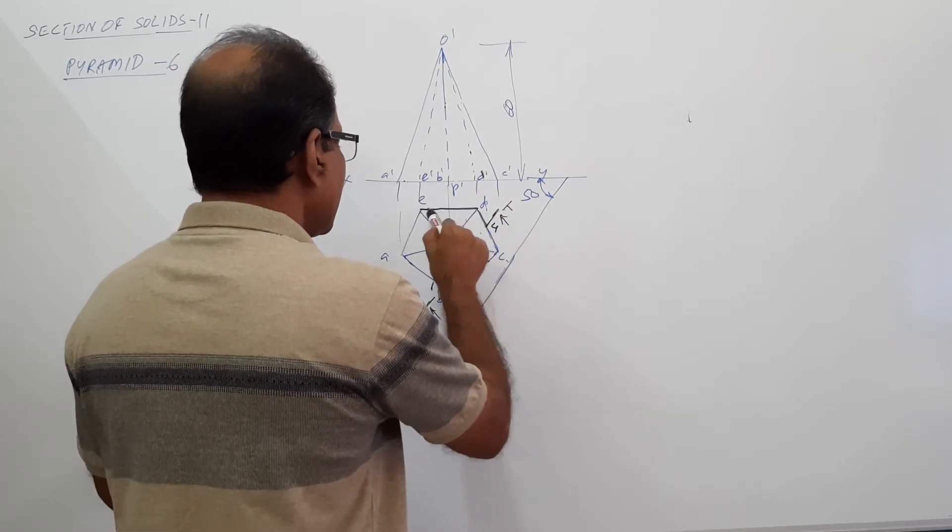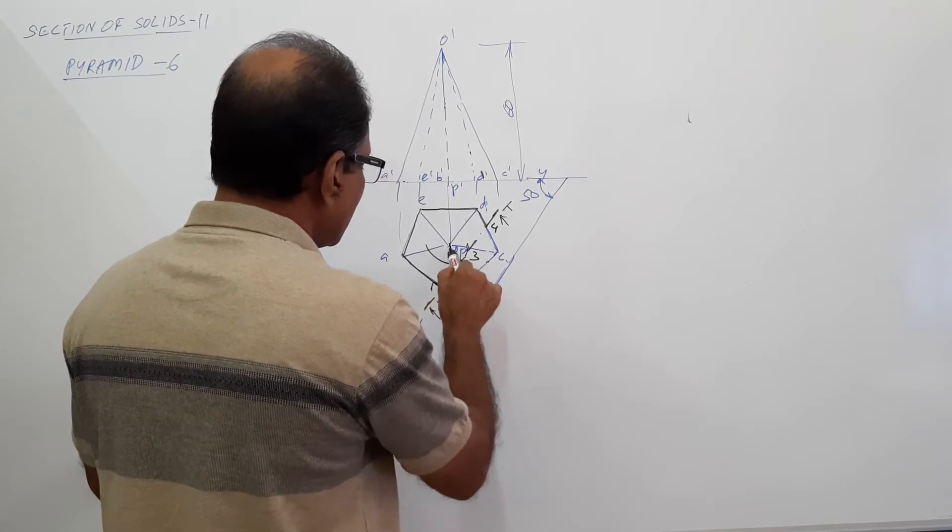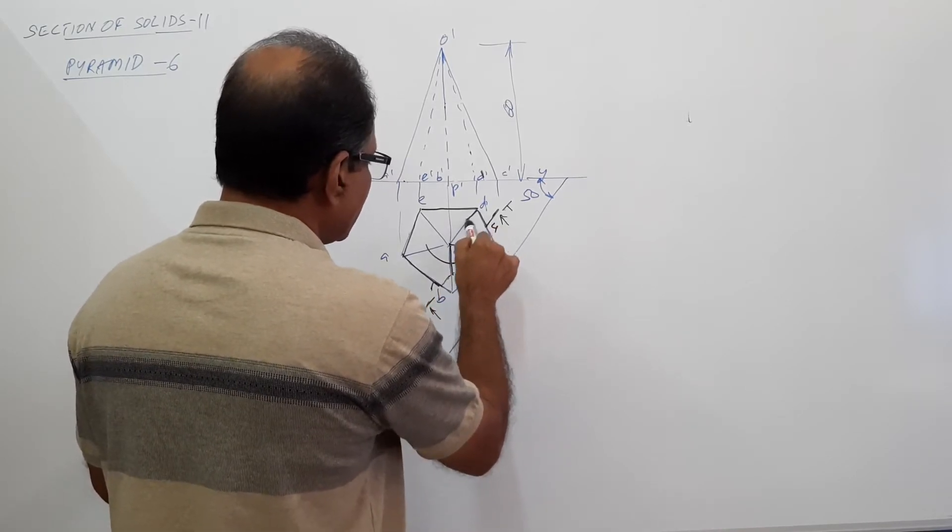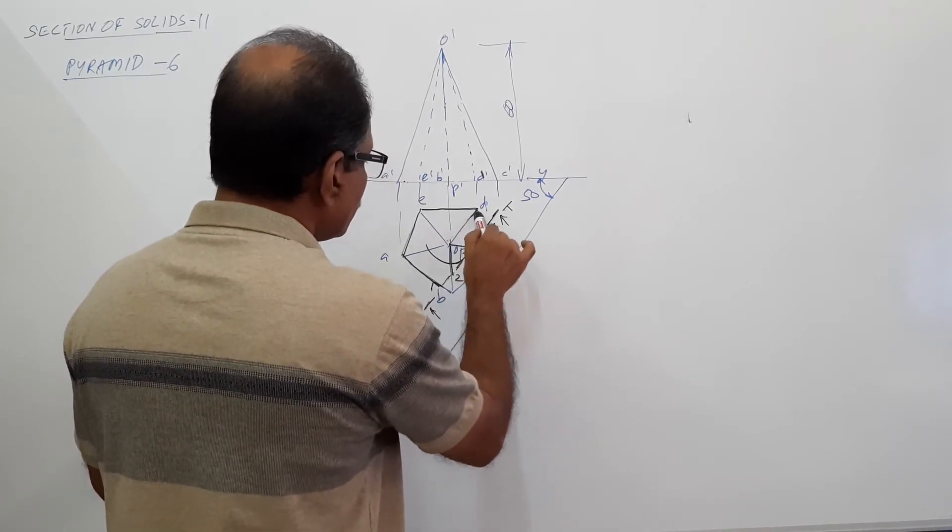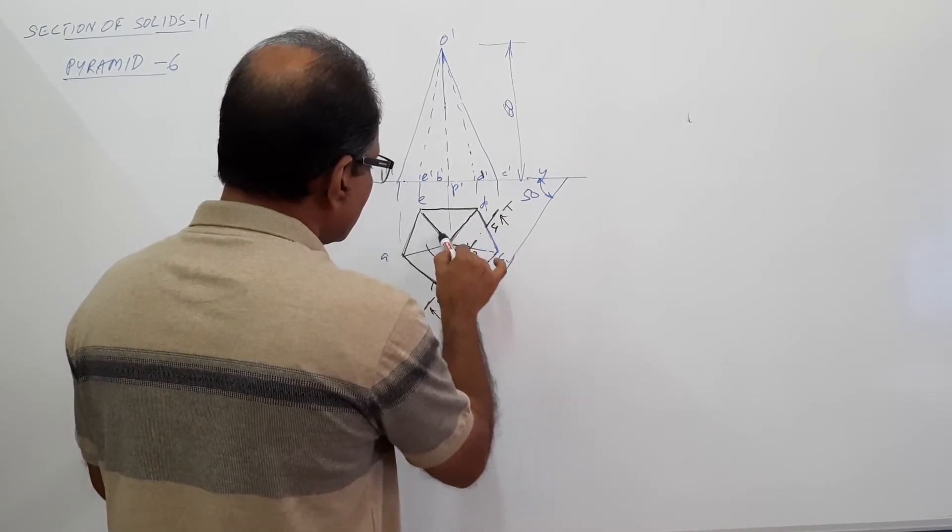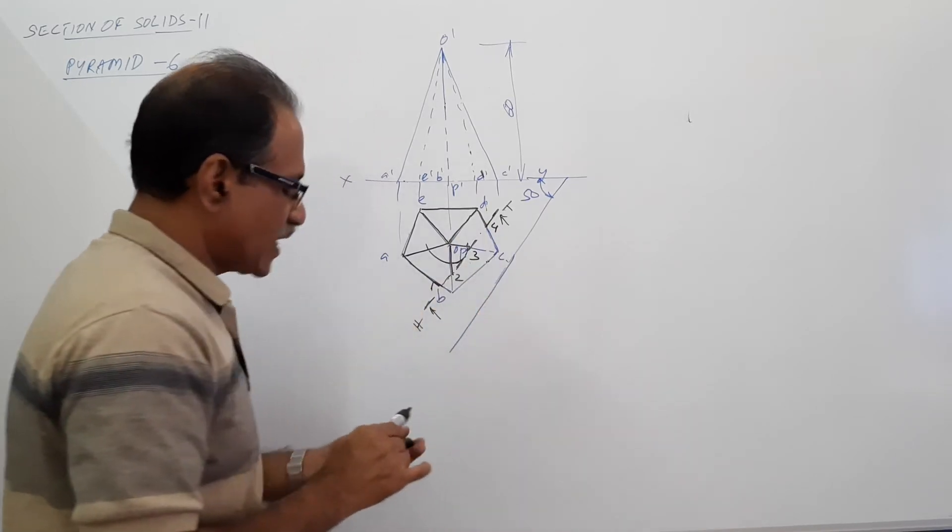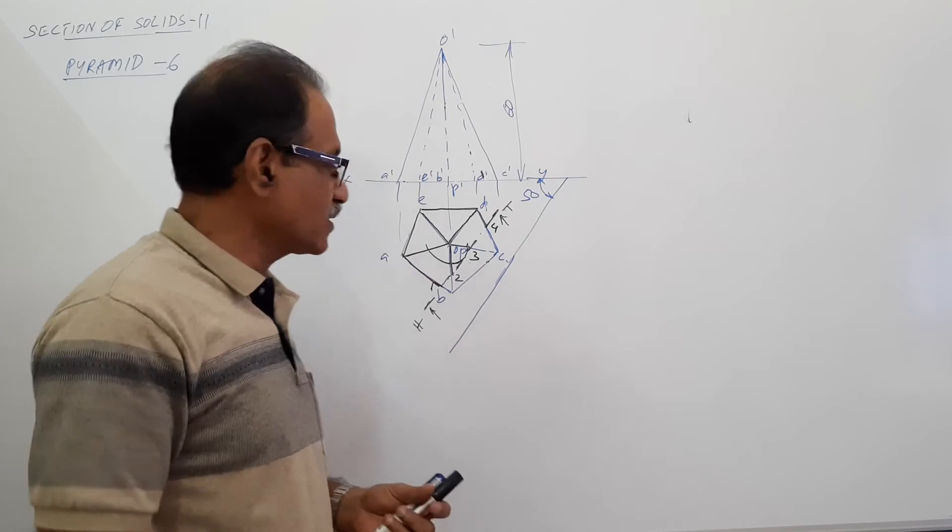What will you dark? You will dark this. What does it indicate? It indicates that this portion of the pyramid is kept and the other portion is removed. When you dark it, don't make it too dark. Use your H pencil only to darken it.